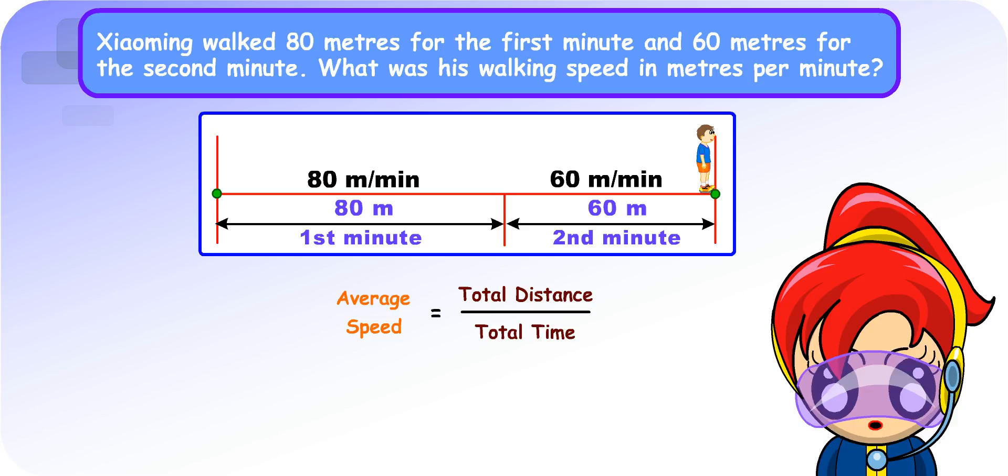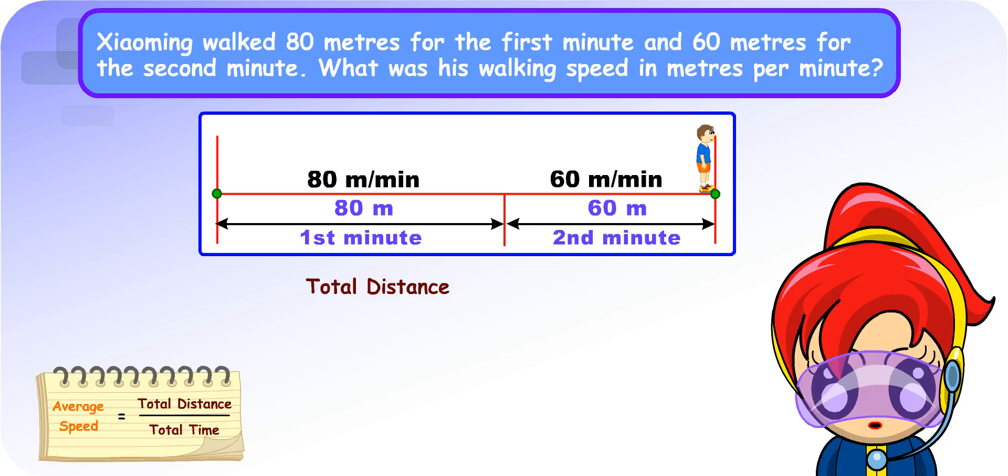Okay, I see. Now, I know how to find out Xiaoming's average speed in meters per minute. The total distance he walked is 80 meters plus 60 meters. That's 140 meters. The total time he walked is 2 minutes. So, his average speed is 140 meters divided by 2 minutes. The answer is 70 meters per minute. Clever girl!